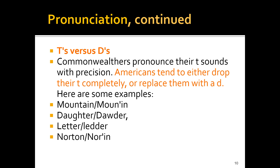Continuing pronunciation — T's versus D's. Commonwealthers pronounce their T sound with precision. Americans tend to either drop their T completely or replace it with a D. Here are some examples: 'mountain' — you can see they replaced the T. So Britishers say 'mountain' clearly, while Americans say 'moun-n' dropping the T, or replace it with a D sound.